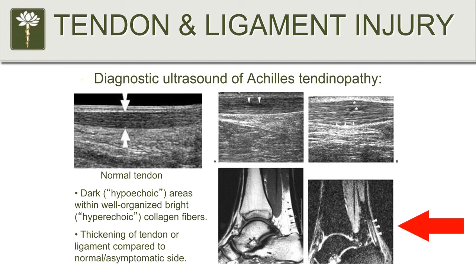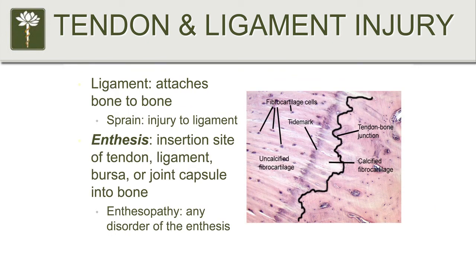This shows an MRI correlation of Achilles tendinopathy flipped vertically. Now, ligaments are structures that attach bone to bone — a tendon attaches muscle to bone, a ligament attaches bone to bone — but when you look at them under a microscope, they actually look pretty similar in terms of fiber structure. A sprain is specifically an injury to a ligament, whereas a strain is an injury to a tendon or a muscle.